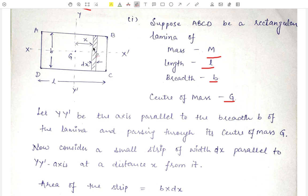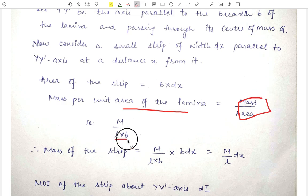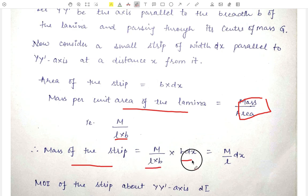As it is a rectangular lamina, the area of the strip will be equal to length into breadth, that is B·dx. Now since M is the mass of this complete lamina, the mass per unit area of the lamina is equal to mass upon area, that is M upon L·B. Therefore the mass of the strip will be equal to (M/LB) into B·dx, which equals M/L · dx.